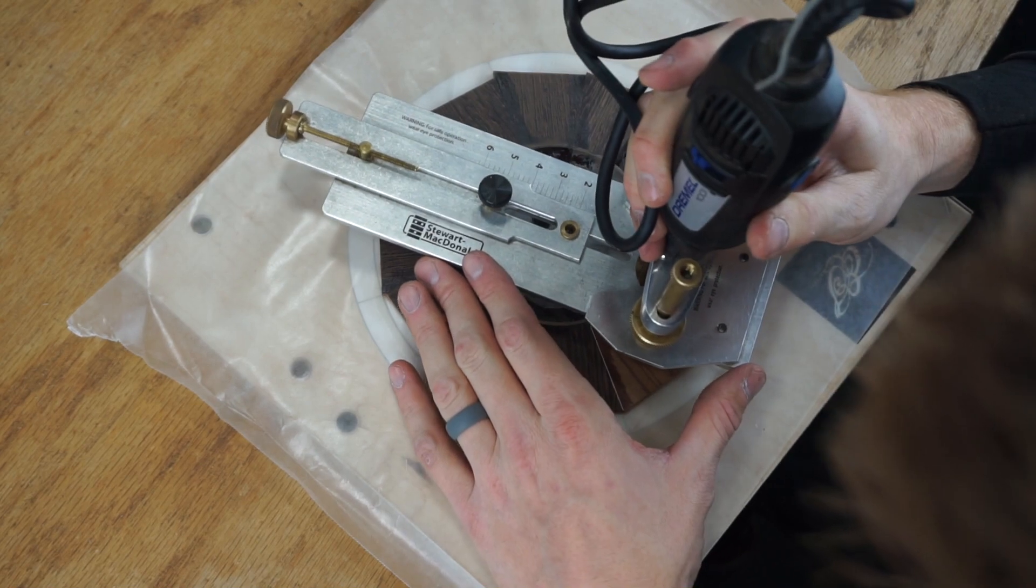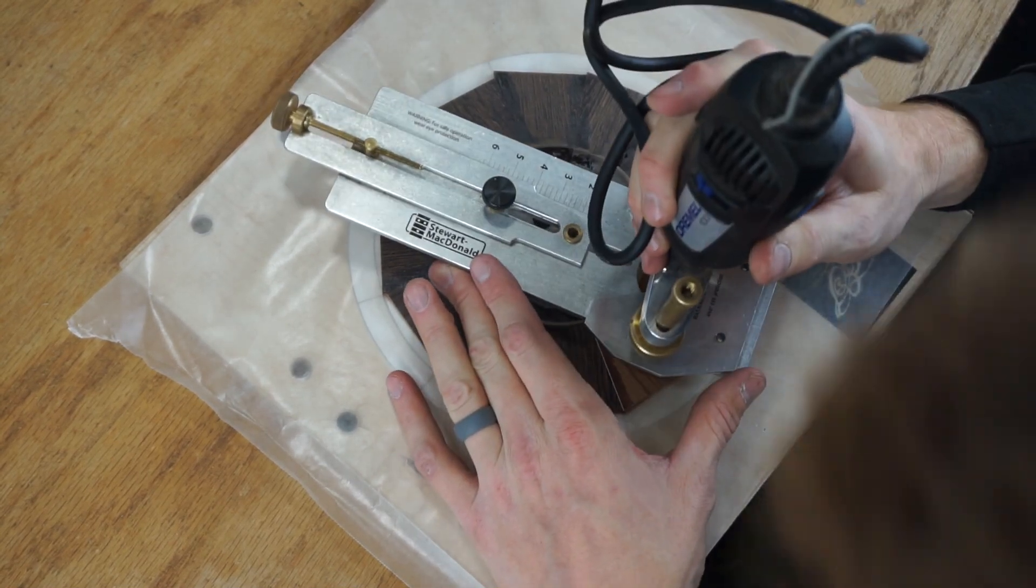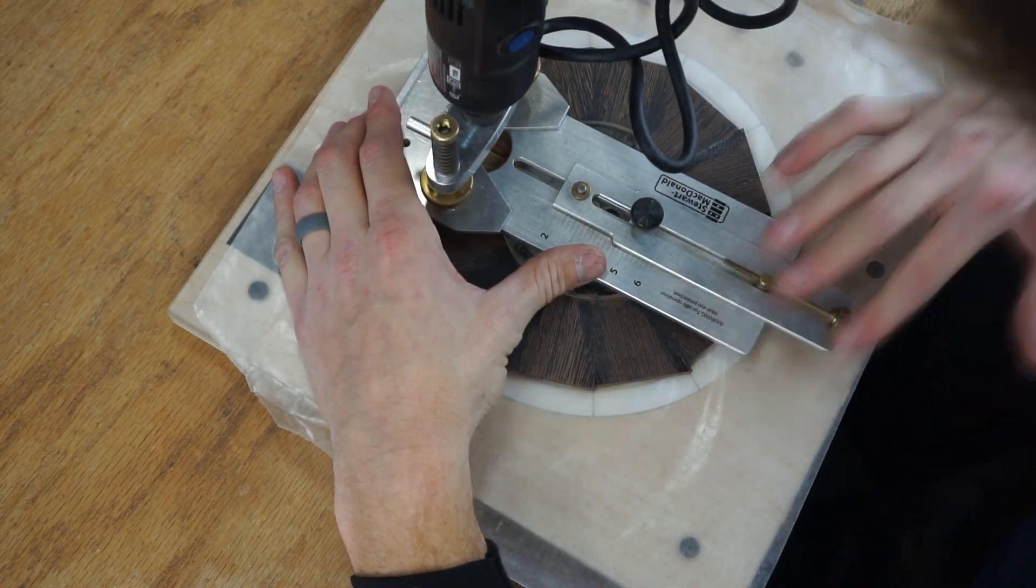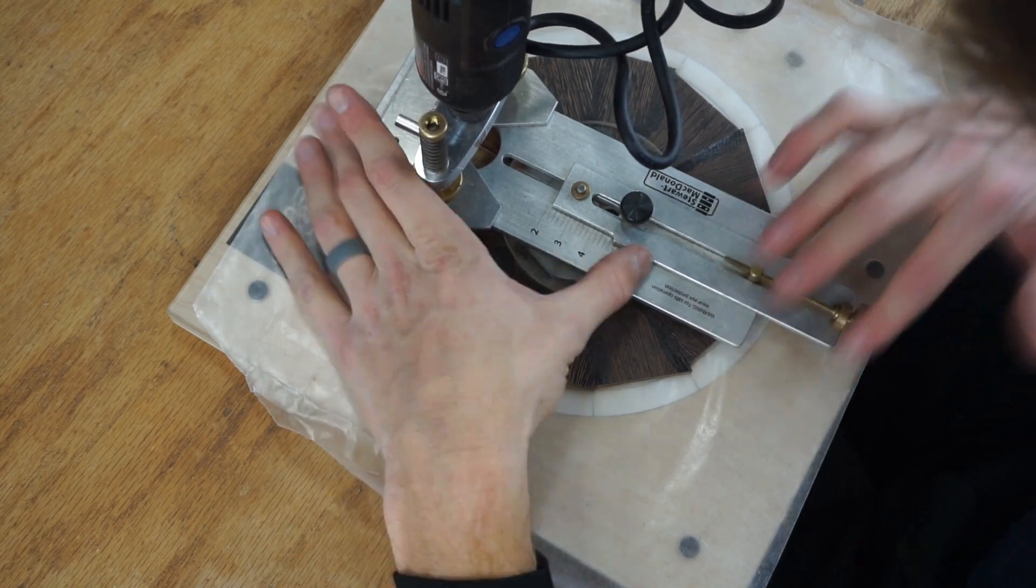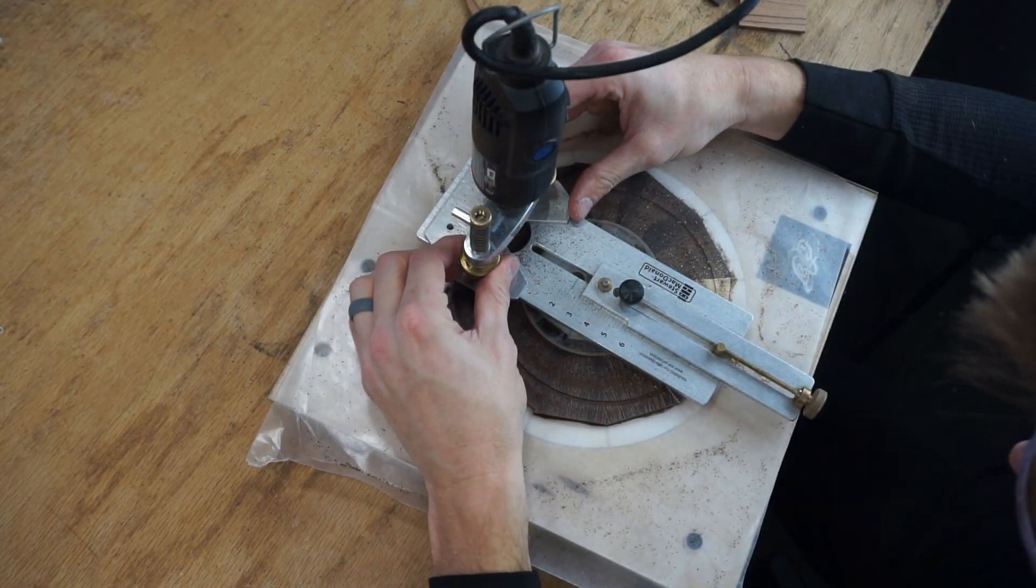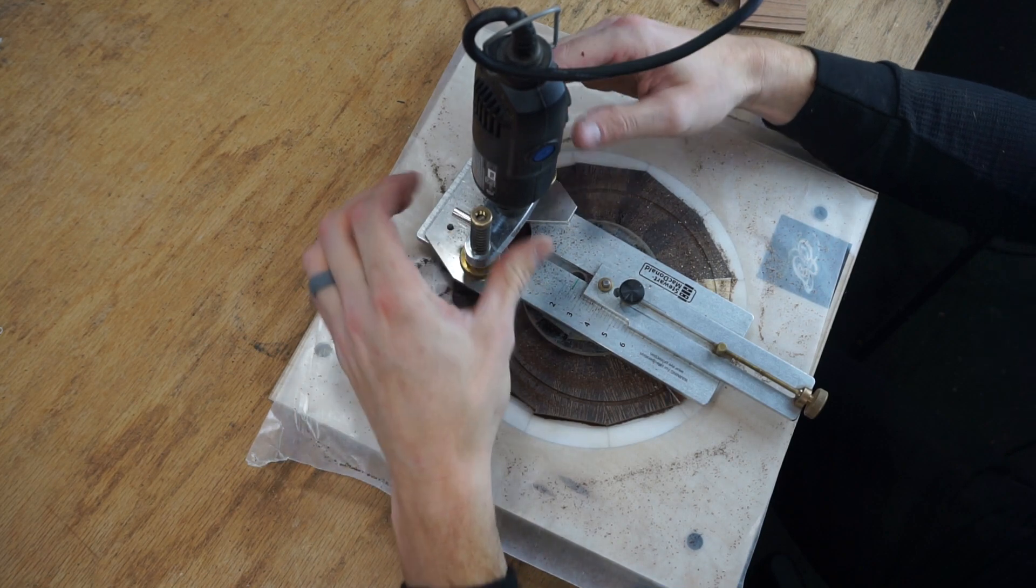Next I set up a Dremel tool in a circle cutting jig and I place the circle cutting jig on the pin. Remember the pin is already in the offset location. Now I set the circle cutting jig to the appropriate radius to make my outside cut. I adjust the bit's depth to make an initial just-grazing pass.